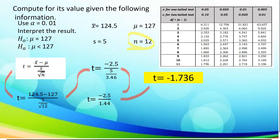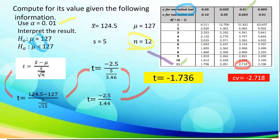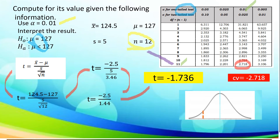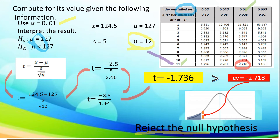We now use the t-table. The alternative hypothesis results in a one-tailed test, specifically a left-tailed test. Using level of significance 0.01 and degree of freedom n minus 1 equals 11, the critical value is 2.718. Since it is a left-tailed test, the sign is negative 2.718. Using the standard normal curve, since the computed value of negative 1.736 is greater than the critical value of negative 2.718, we reject the null hypothesis.